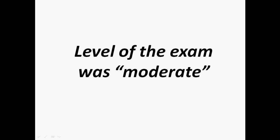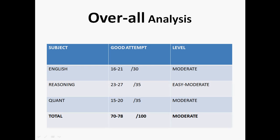Let's start with the overall analysis. If you have attempted around 23 to 27 questions in reasoning, then it is a good attempt, and the level of reasoning was easy to moderate. For quant, it was moderate and 15 to 28 attempts is a good attempt. Overall, if you have attempted around 75 questions, it is a good attempt and the overall level was moderate.